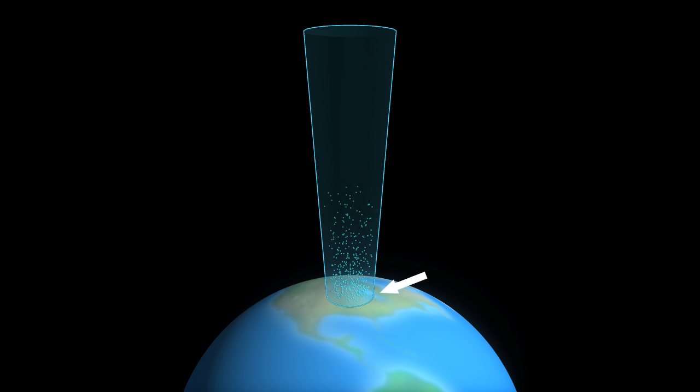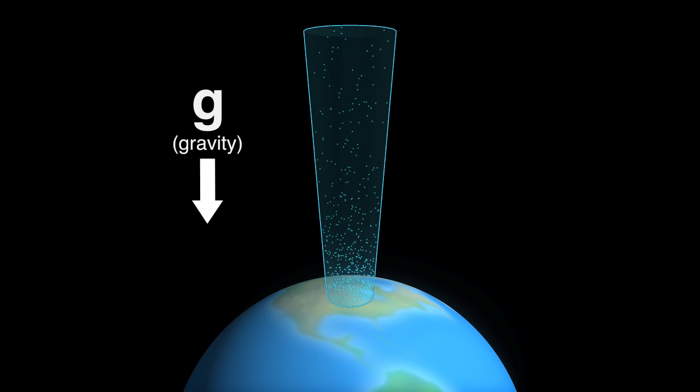Before we go any further, let us become familiar with the atmosphere. If we take a column of air starting at the ground and traveling up all the way into space, you notice that the molecules of air at the Earth's surface are much more compacted together than the molecules up in space. The reason for this is gravity.